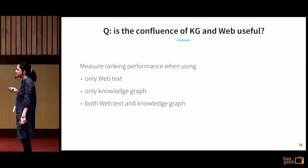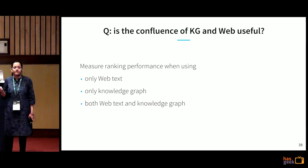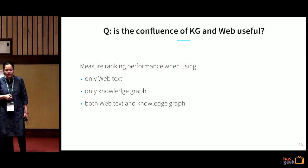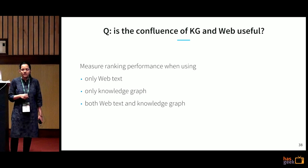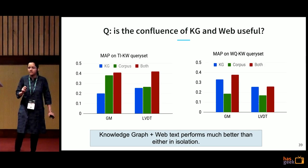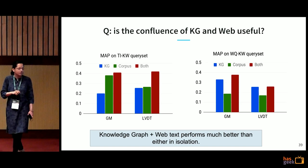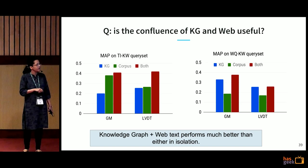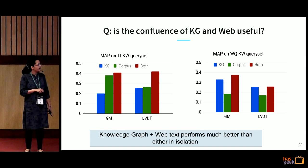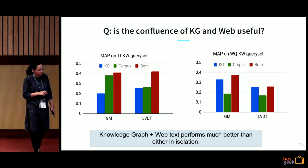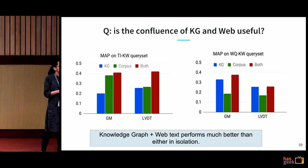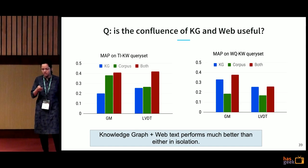The first experiment was an ablation study: we compared using only web text for question answering, only the knowledge graph, and finally both together. The blue bar indicates experiments using only the knowledge graph, the green bar using only the web corpus, and the red bar using both. Under different experimental conditions and models, we always found better performance when using both knowledge sources.